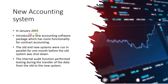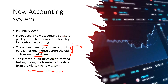It says that in January X5 they introduced new accounting software with more functionality for contract accounting, and they ran these systems in parallel. There's a risk for one month before the old systems were shut down. For completeness, we need to make sure all data on the old system was transferred safely to the new system, because the risk is there are going to be gaps in that transfer process, or the new system isn't quite working and is still missing data.